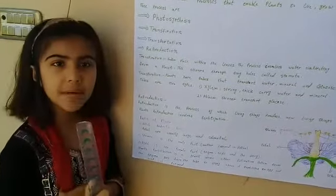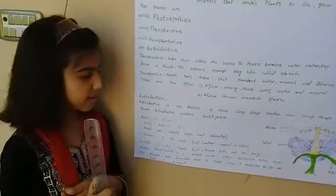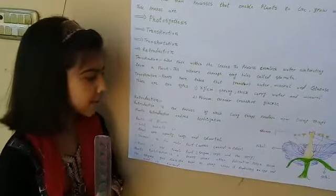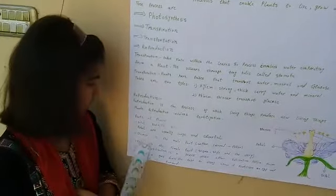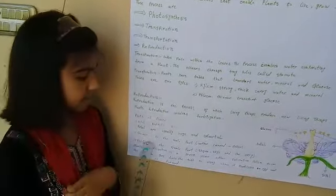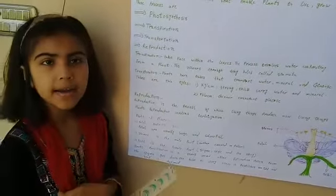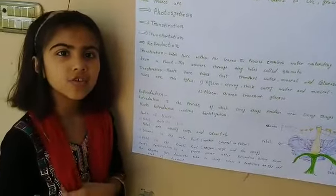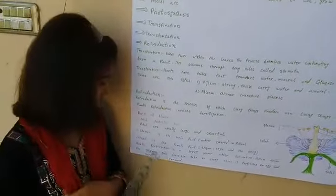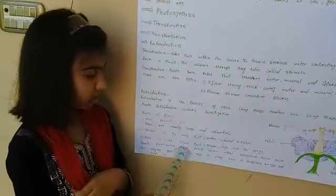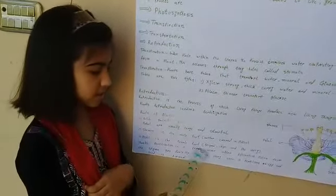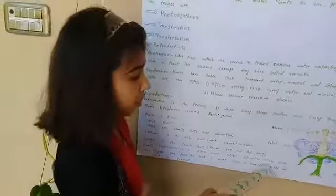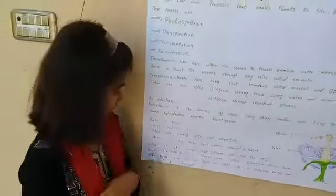Stamen is the male part. The anther is covered in pollen. Pistil is the female part, consisting of the stigma, style, and ovary. Plant fertilization is a process that occurs after pollination.